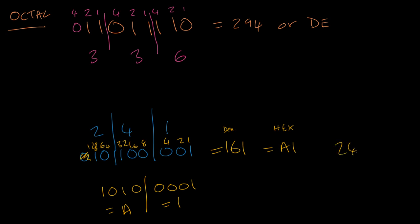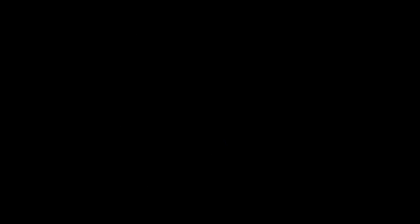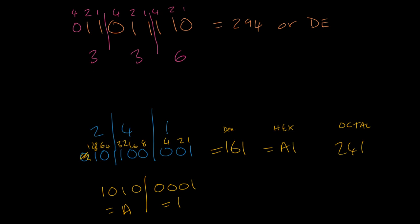So 241 in octal, all these numbers mean the same thing. They're just a different way of representing our number. So that's octal. We've done our hex and we've done our octal. The last one, let's take a look at the binary coded decimal.